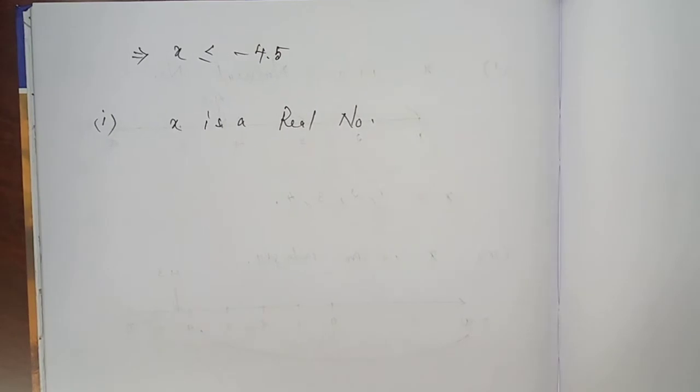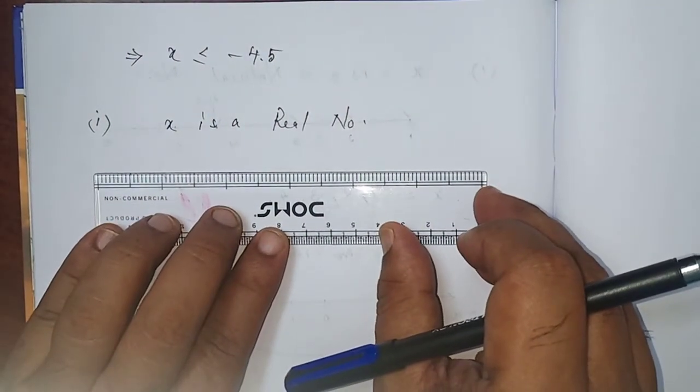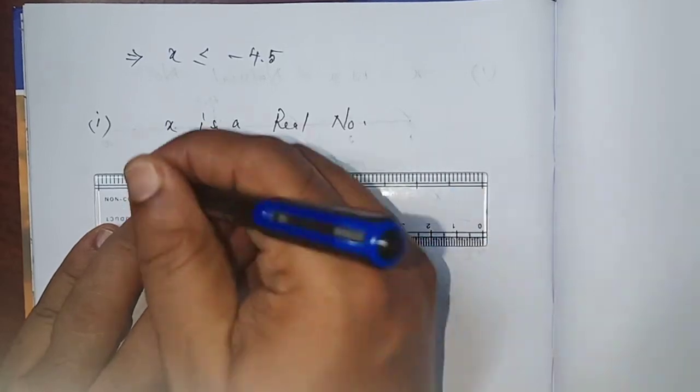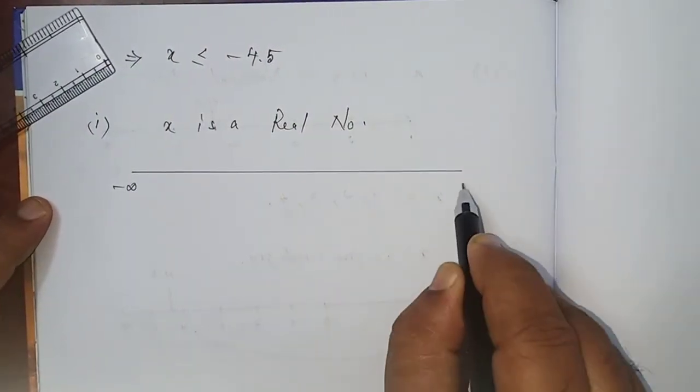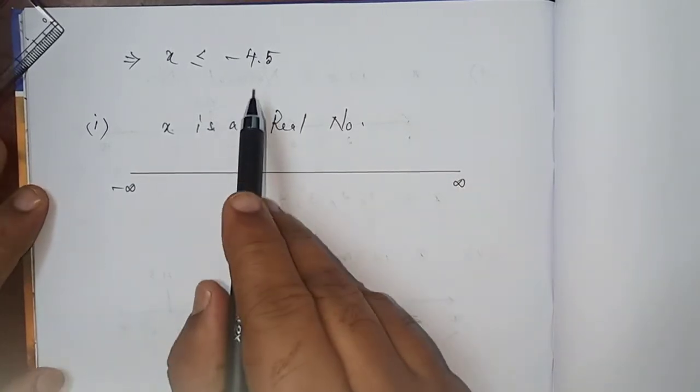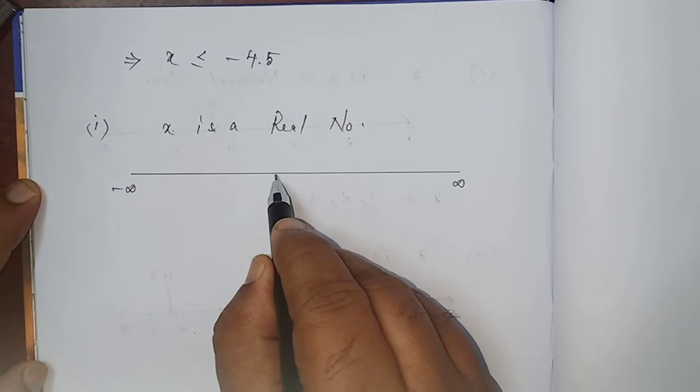x less than or equal to, given. So, -4.5. So I write -4.5 over here.